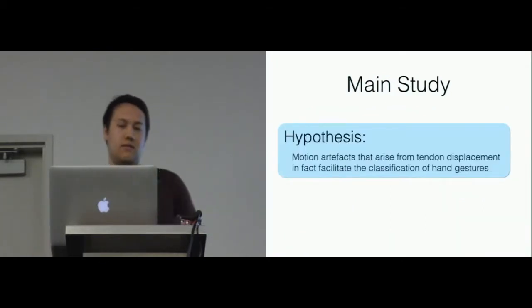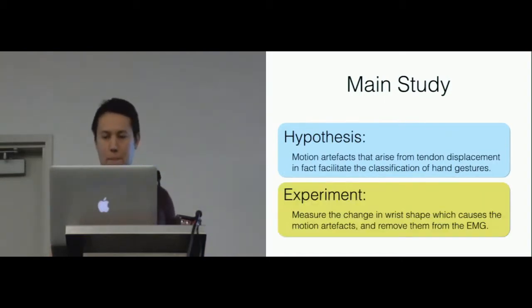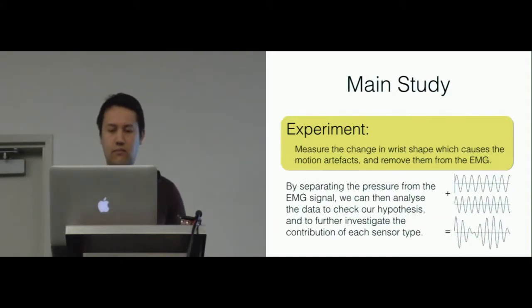We created a hypothesis which was that the motion artifacts that arise from this tendon displacement, in fact, facilitates the classification of hand gestures at the wrist. In order to test this hypothesis, we created another experiment, this time measuring the change in shape of wrist and removing the pressure modulation from the EMG signal. The idea is that we treat this modulated signal as a combination of two different signals, and by separating these signals, we can investigate the contributions of each sensor type.